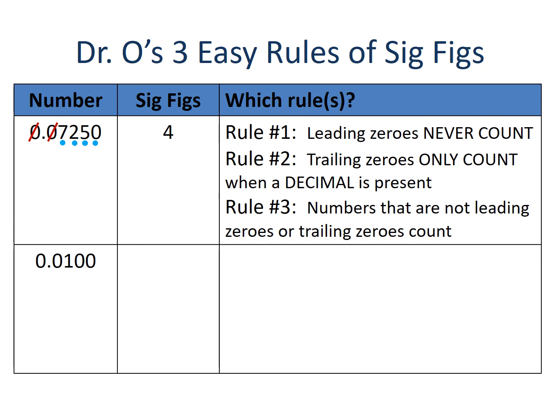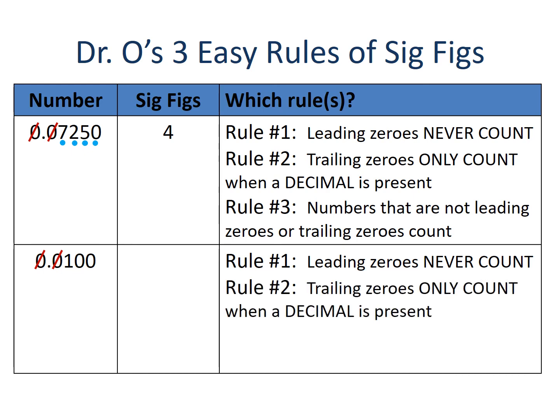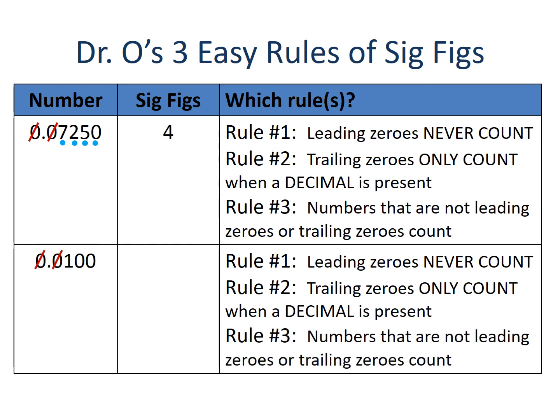Our last example is 0.0100, which invokes all three rules. Rule number one: those leading zeros never count, so we cross those out. Rule number two: trailing zeros only count when a decimal is present — and we have a decimal, so our trailing zeros are important. Rule number three: we have at least one non-zero number that counts. The one and the two trailing zeros are our important digits — three significant figures.